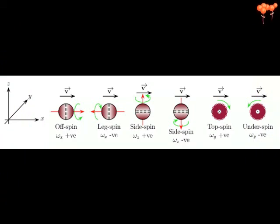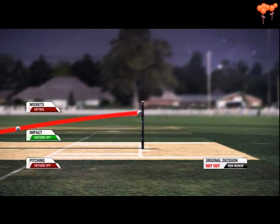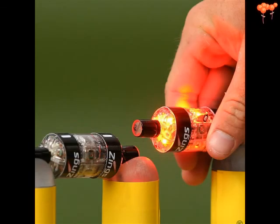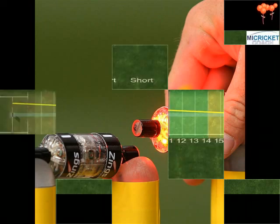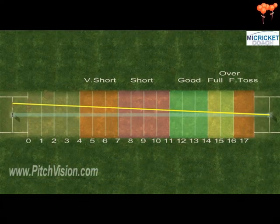Hot Spot is an imaging system used to determine whether the ball has struck the batsman's bat or pad. It uses two infrared cameras at opposite ends of the field, which catch the image of the ball hitting bat or pad by means of elevated temperature at the contact point. Hot Spot was ruled out from the 2015 World Cup due to the cost and difficulty of getting the required equipment to all venues across the two host countries.